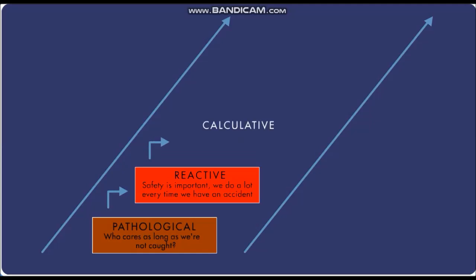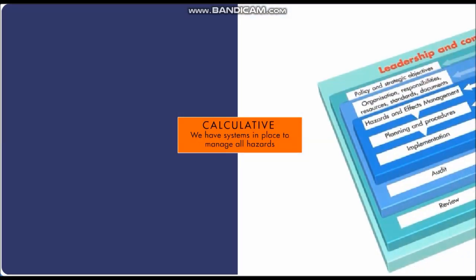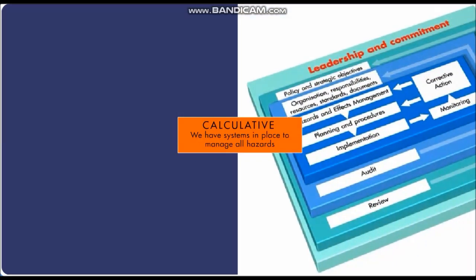The next level is calculative. This is where an organization is comfortable with systems and numbers. A management system has been implemented successfully, and because health, safety and the environment is taken very seriously, there's a major concentration upon the statistics.